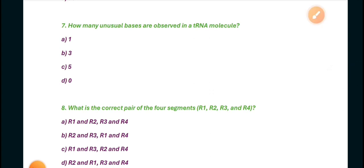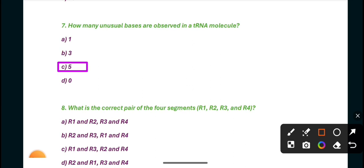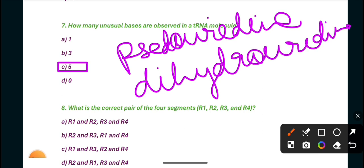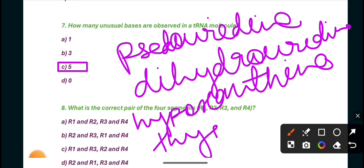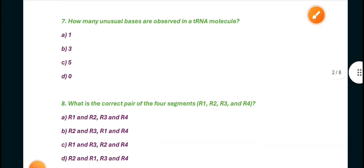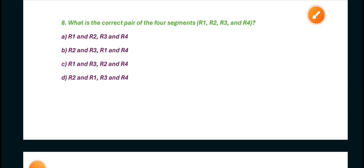Next is how many unusual bases are observed in tRNA? The answer is five. Five unusual bases are like pseudouridine, dihydrouridine, hypoxanthine, thymine, and methyl guanine. So if you want to know what is the correct pair of the four segments, then in this case B is the right answer, R2 combined with R3 and R1 combined with R4.